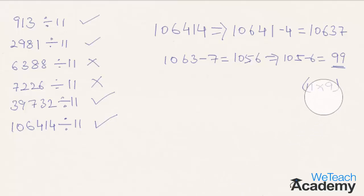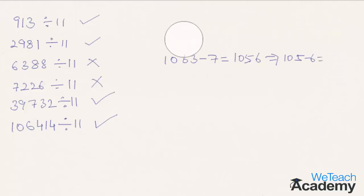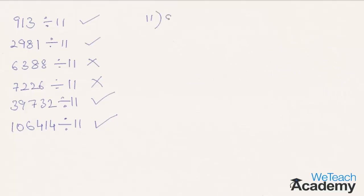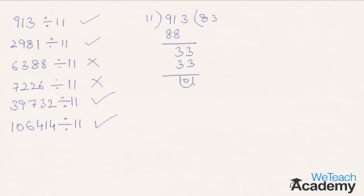Now let us check this concept by dividing each number with 11. Coming to the first number again: 913 divided by 11. 11 times 8 is 88, and we get 3 here. Bringing down the next digit 3, we get 33, and 11 times 3 is 33. So we get remainder 0, and the given number is exactly divisible by 11.